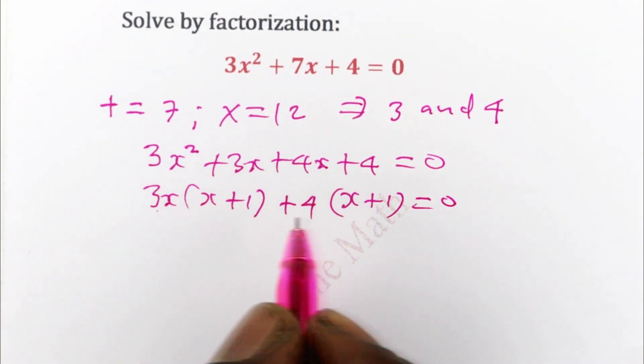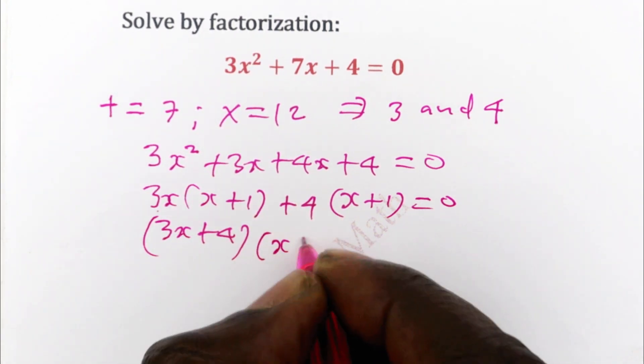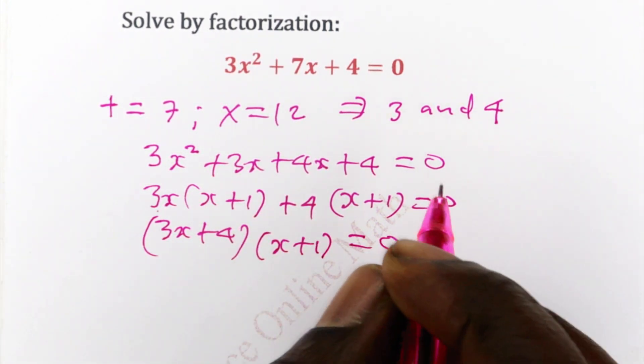So we have 3x plus 4 times one of these, that is x plus 1, is equal to 0.